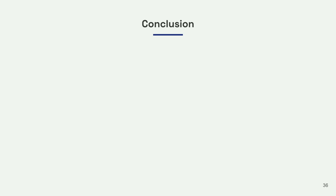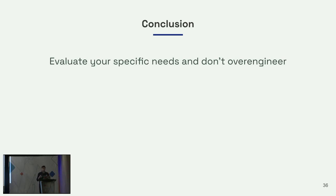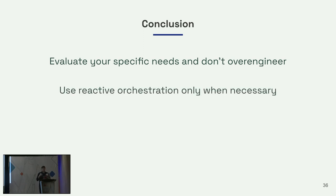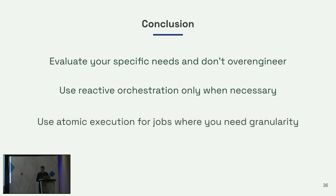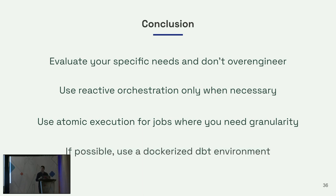Okay, let's just make the conclusion. The main thing I want you to take away is: I didn't really give you a playbook or a prescription for how to do things. I tried to evaluate the pros and cons of many different approaches, and I want you to evaluate your own specific needs. Most importantly, don't over-engineer — always ask yourself, do you really need it to be super reactive or super granular? Keeping things simple is always the best way to go. Use reactive orchestration only when you really need it. For atomic execution, it's a really powerful tool, but you may not always need it — maybe you can mix and match. For your DBT hourly run, you may not care about introspectability because if something fails you can just wait an hour, fix it, and things will build. Use a Dockerized DBT environment because your developers will be very happy.